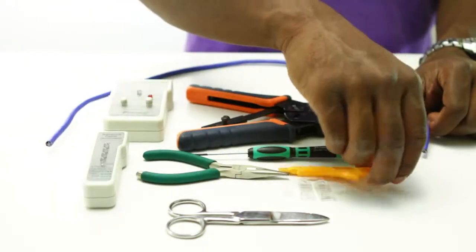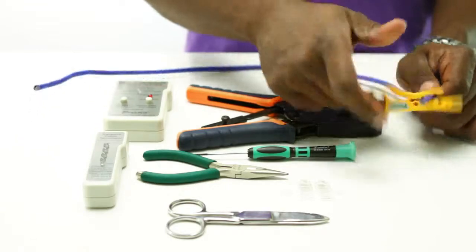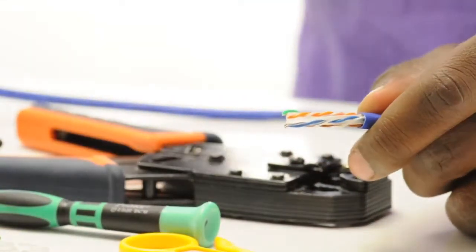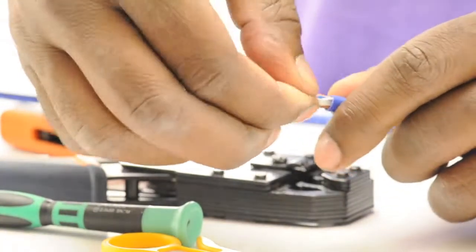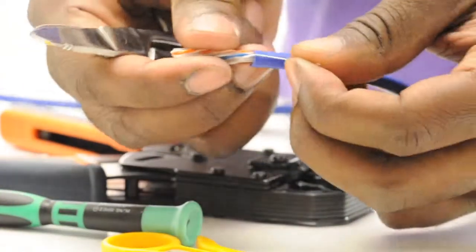Now let's begin. The first step is to remove the jacket from the cable. Using my strip tool, I rotate it around the outside of the jacket. Exposing the inside of the cable, I can see my four pairs and a pull string.